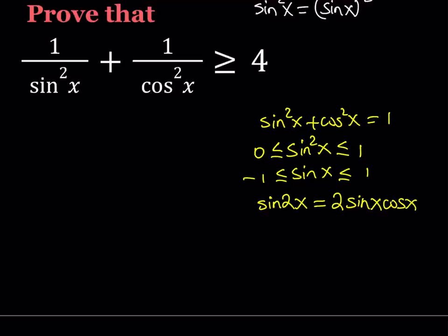So those are the tools that I'm going to be using to prove this inequality. So let's go ahead and take a look at it. I'm going to make a common denominator on the left hand side. Multiply by cosine squared and then by sine squared, and then divide it by the product which is the common denominator. And we're supposed to prove that this is greater or equal to 4.